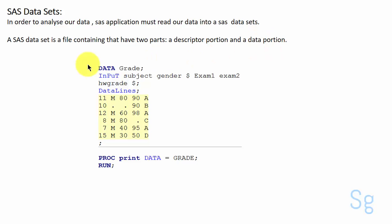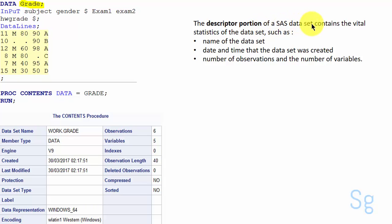In this lecture we will be talking about this program. The descriptor portion of a SAS data set contains the vital statistics of the data set such as name of the data set, date and time that the data set was created, number of observations and the number of variables.